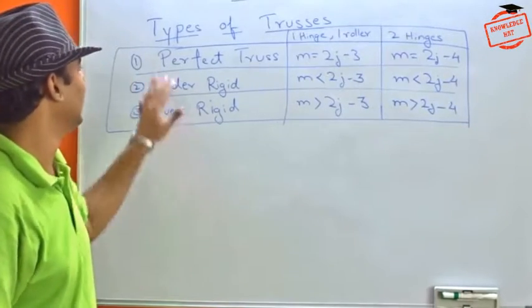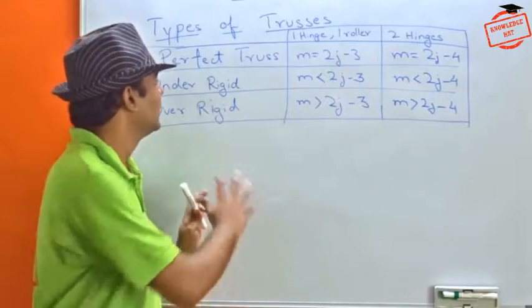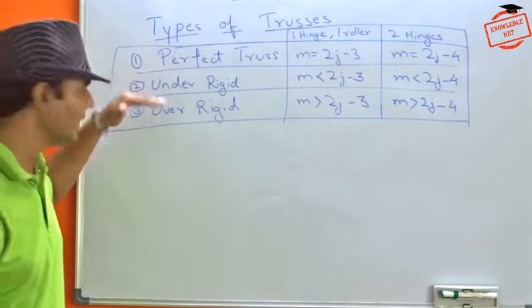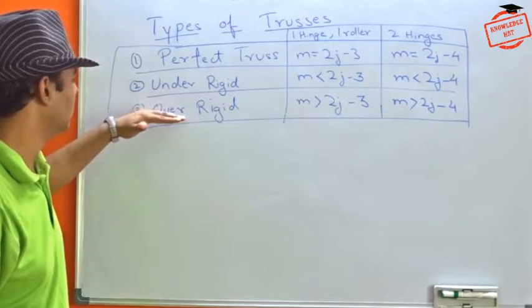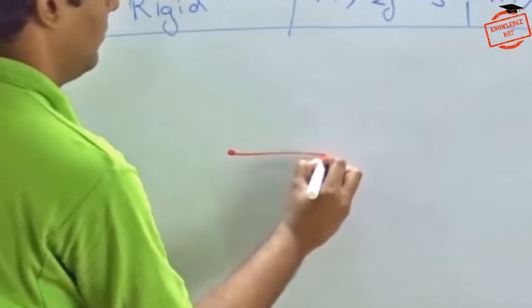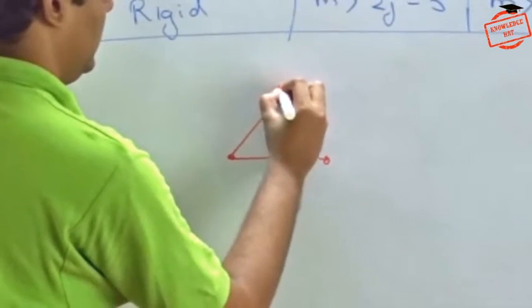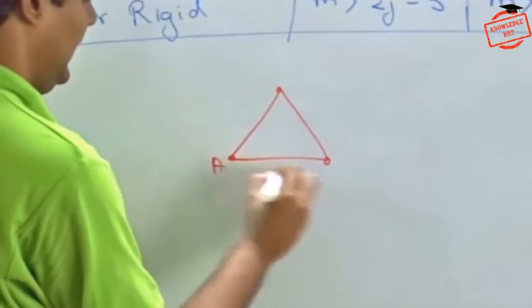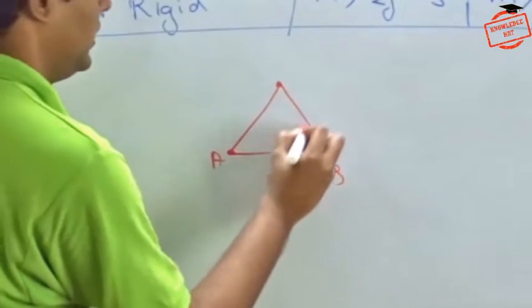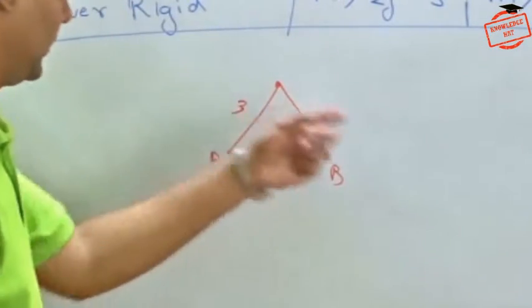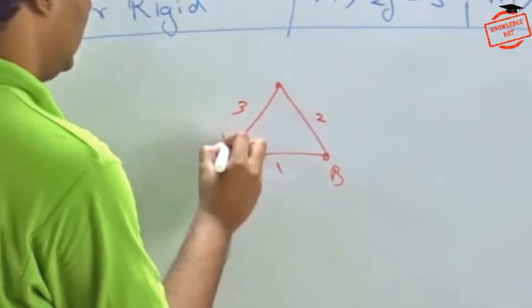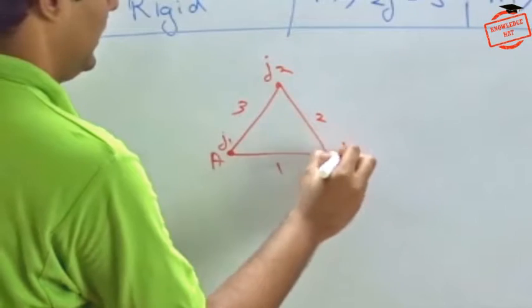Okay. Now the next topic that we will study is the types of trusses. A perfect truss, an under-rigid truss, or an over-rigid. So we will first see a very simple diagram. Here, suppose this is A and B. We have one, two, and three members here. And we have three joints as well. This is J1, this is J2, and this is J3.